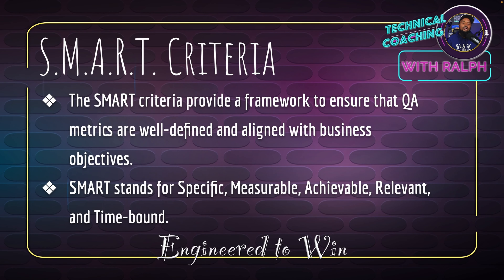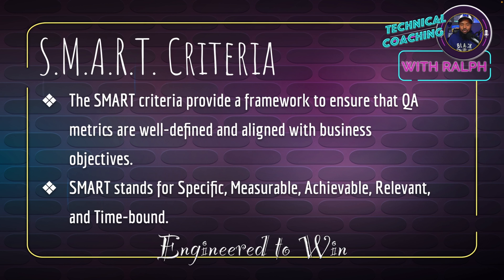The SMART criteria provides a framework to ensure QA metrics are well-defined and aligned with business objectives. SMART stands for: Specific, Measurable, Achievable, Relevant, and Time-bound. Using the SMART criteria will lead to some very smart decisions.